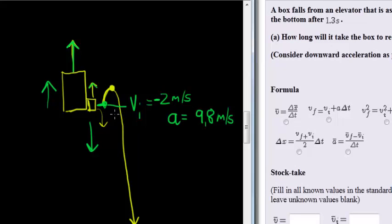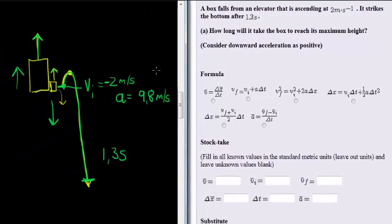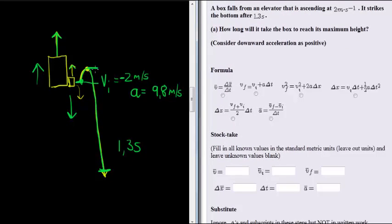Now what we also do know is that the total time in which it takes to reach the bottom, this total time going up and coming down, that total time is 1.3 seconds. The final thing that we know for the first question, how long does it take for the box to reach its maximum height? Here we have the maximum height. We know the velocity at this point is equal to 0.